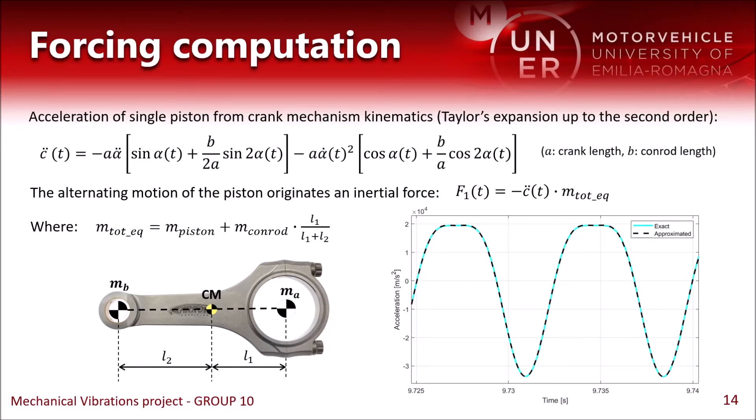And the last two terms are due to the angular velocity. We decided to stop at the second order because, as can be seen from this plot, we have that it is a very close approximation of the exact acceleration of the piston. In fact, the mean error between these two curves is only about 5.3%.